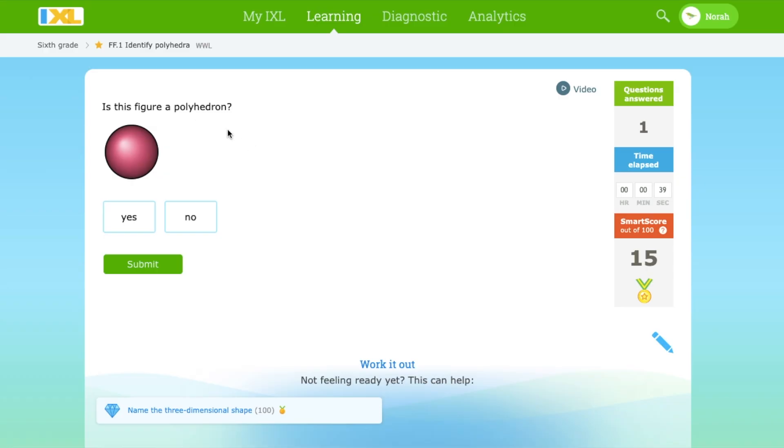Is this figure a polyhedron? No, again, look at it. It's a three-dimensional figure but not a polyhedron. So no.